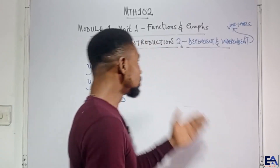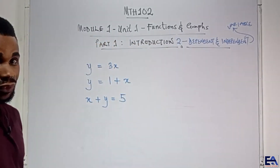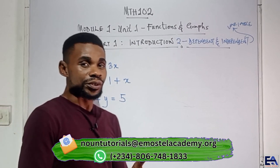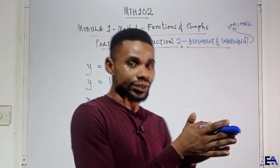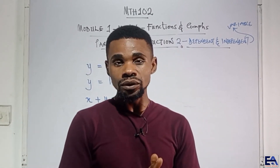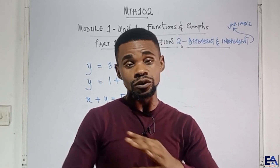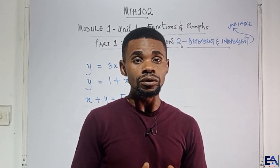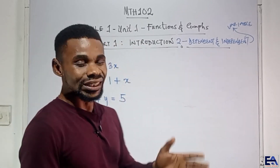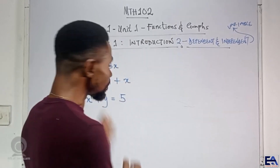In this class we'll be discussing the dependent and independent variable. The dependent variable is a variable that depends on another variable. The independent variable is a variable that can assume any value — it doesn't have to depend on another variable. But whatever value we supply for the independent variable is what determines the value of the dependent variable.